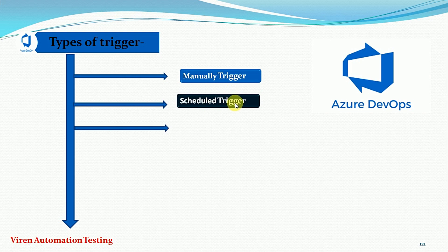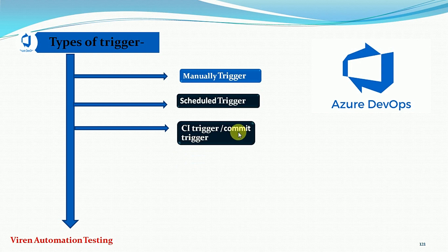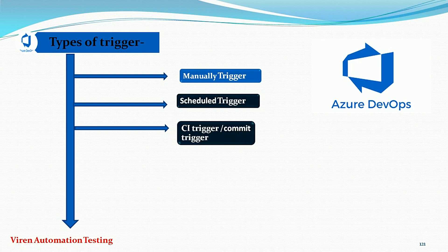The third type is the CI trigger, also called the commit trigger. This trigger will happen when anyone changes the code in the source file and commits the source code to the remote server. For example, if our code is in a GitHub account and one person makes changes and pushes the code, after committing, this trigger will happen automatically and continuous integration will run automatically.